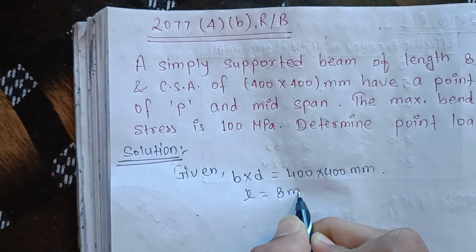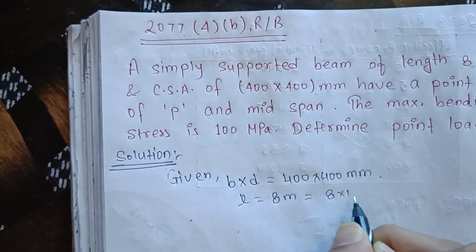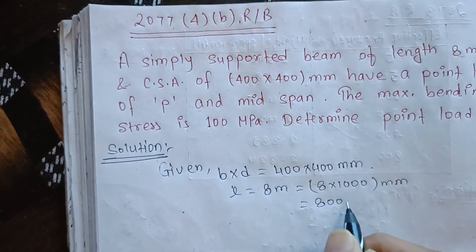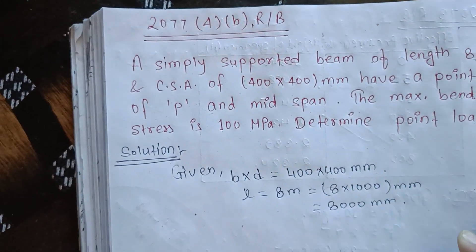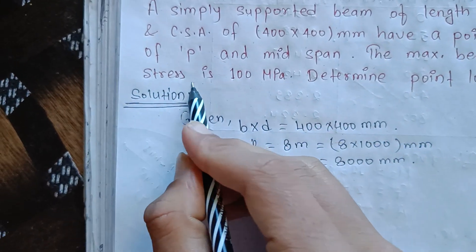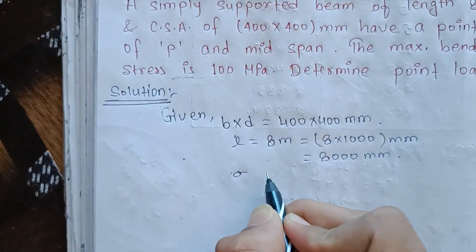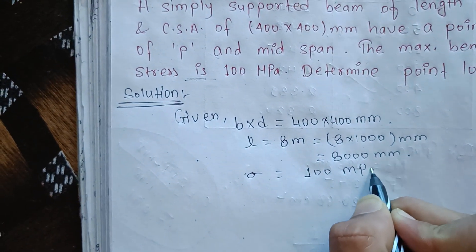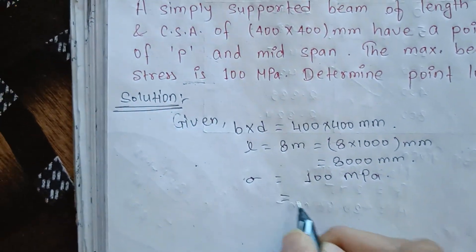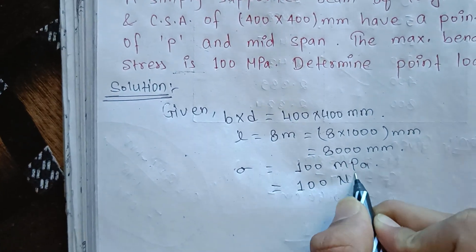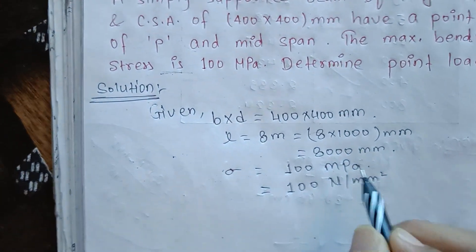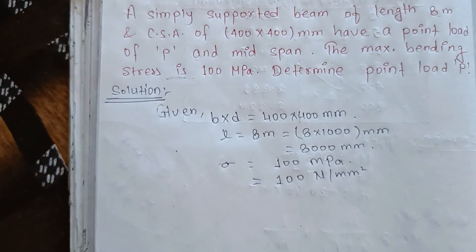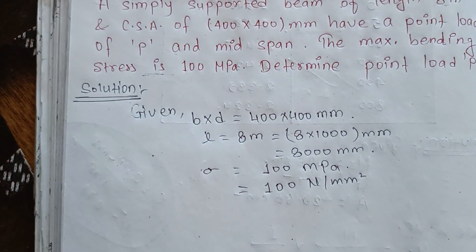Given: L equals 8 meters, which in mm is 8 into 1,000 equals 8,000 mm. The bending stress, sigma, is 100 MPa, which equals 100 Newton per mm squared. Now there may be confusion between N/mm² and MPa — they are the same unit.